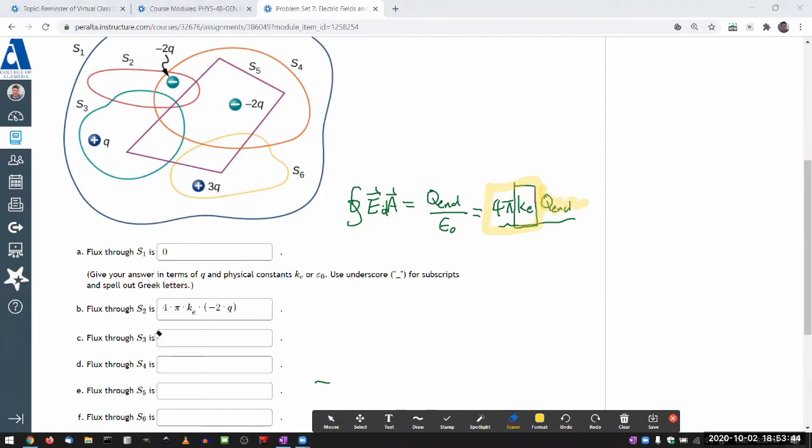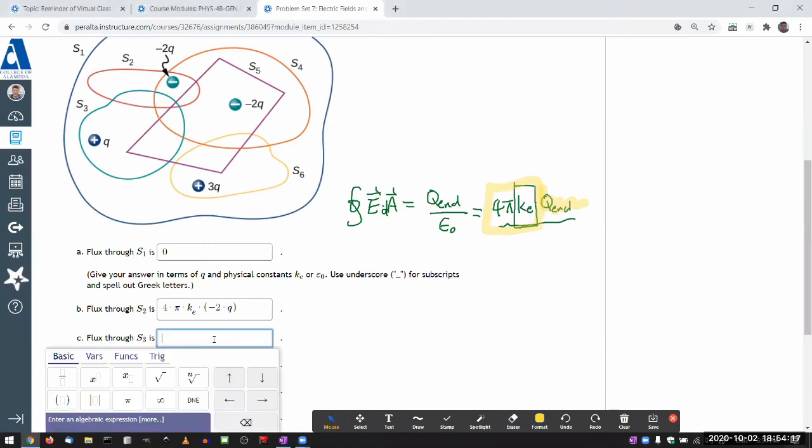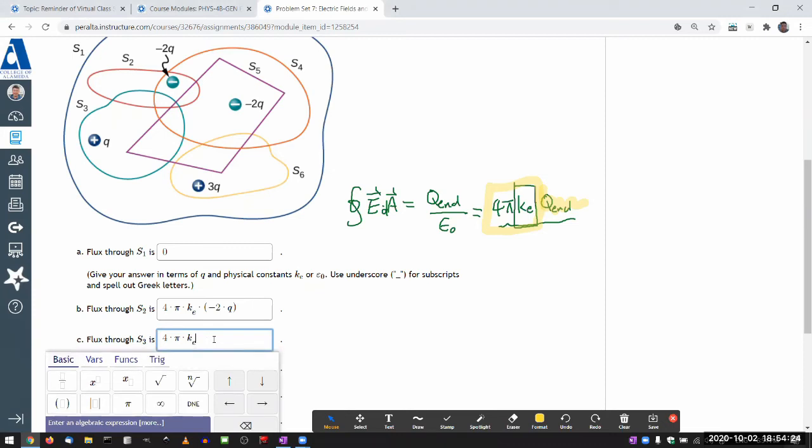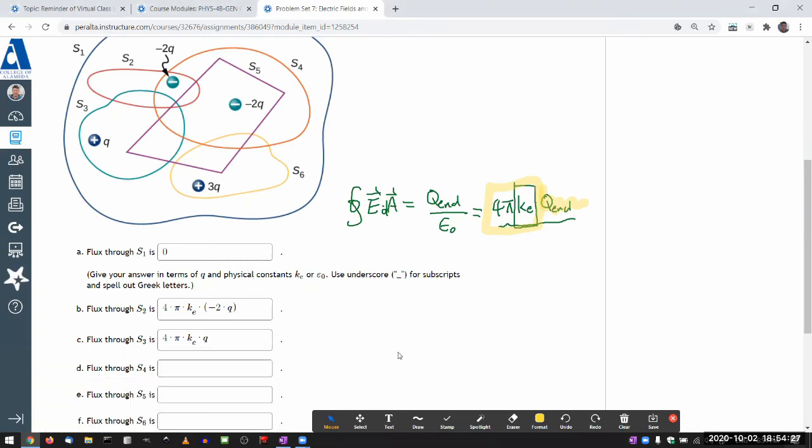Flux through S3 is the surface that encloses just the charge +Q. Now, the surface does go very near this negative charge—doesn't matter. What charges are placed outside doesn't affect the net flux. Any electric field pointing towards that negative charge had to enter this surface somewhere and then go out, so those contributions cancel. Flux through S3 is 4πk times Q.